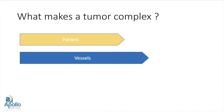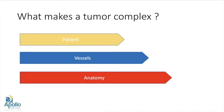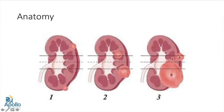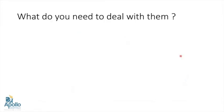Atherosclerotic vessels can result in difficult clamping and add to the complexity of surgery. We'll be discussing the anatomical factor which makes a tumor complex. Tumors lying on the surface of the kidney — exophytic and polar — are comparatively easier, compared to tumors that are large and closely related to the PCS system or hilum. Endophytic tumors also pose a difficult surgical challenge.